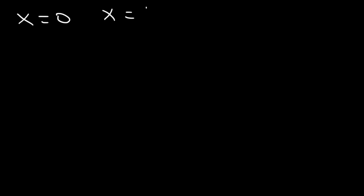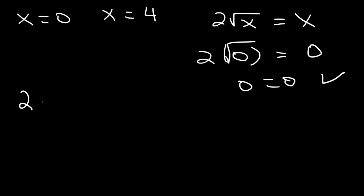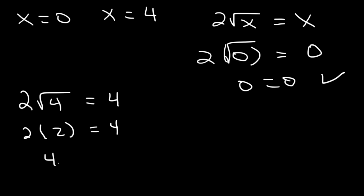Now let's check both answers using the original equation. When x is 0, the square root of 0 is simply 0, so 0 equals 0 — the equation is true. When x is 4, the square root of 4 is 2, and 2 times 2 is 4. So this works as well. Therefore, both answers are correct.